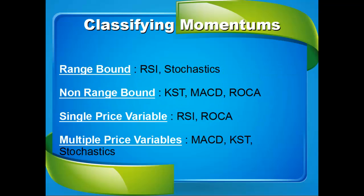There are two bases on which you can classify momentum indicators. First, either they are range-bound or not. Second, how many variables of price were used to calculate them. For example, the Relative Strength Index, also known as RSI, is a range-bound indicator because its value always remains bounded between 0 and 100, whereas absolute rate of change doesn't have any range. Also, ROC and RSI are calculated based on a single price variable — the closing price.